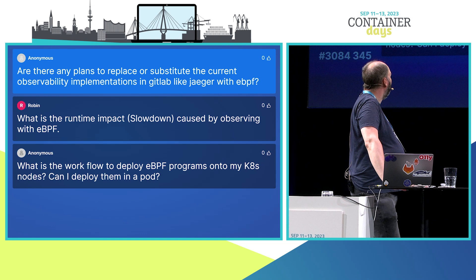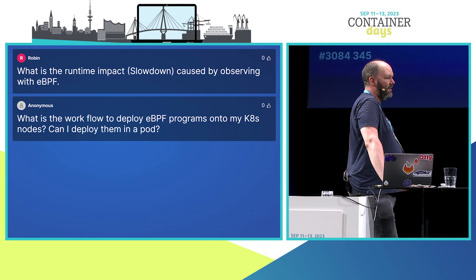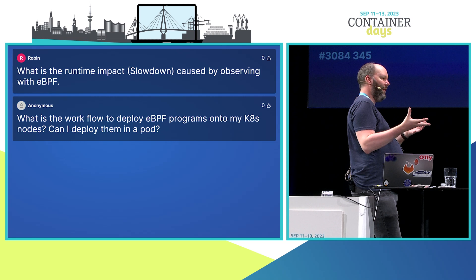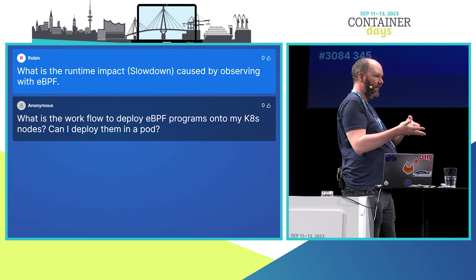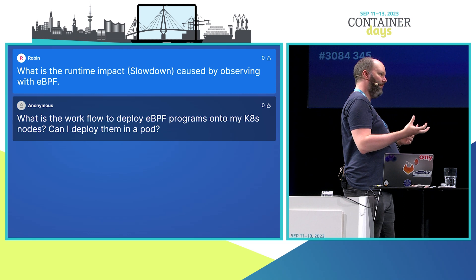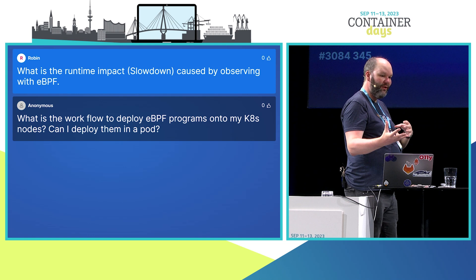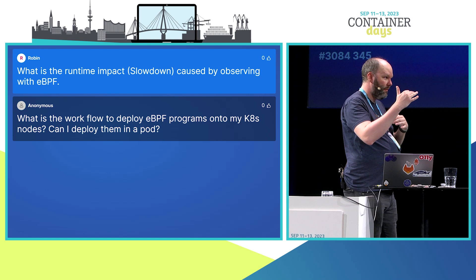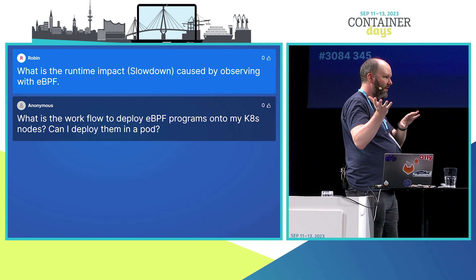What is the runtime impact of observing with eBPF? It's hard to say since I'm not the vendor. There is a certain slowdown — I've read numbers like 10% or 15% depending on the environment. I'd recommend trusting the vendor's benchmarks, reading about it, and also benchmarking in your own environment. If it's slowing things down or hitting kernel obscurities or bugs, it might be bleeding edge and you should stay stable in production, planning eBPF adoption in a few years, because enterprise environments need stability.